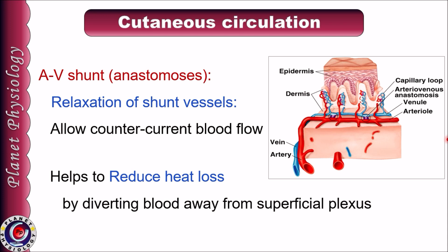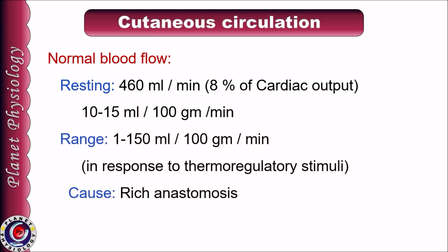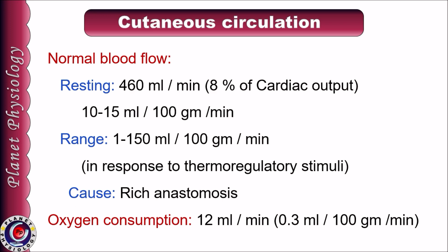Under resting conditions, skin receives about 450 ml per minute of blood flow, which is about 10 to 15 ml per 100 grams of skin tissue per minute, or approximately 8% of cardiac output. This blood flow can vary from 1 ml to 150 ml per 100 grams per minute due to rich anastomoses. Cutaneous oxygen need is very low — just 12 ml per minute, or 0.3 ml per 100 grams of skin per minute.